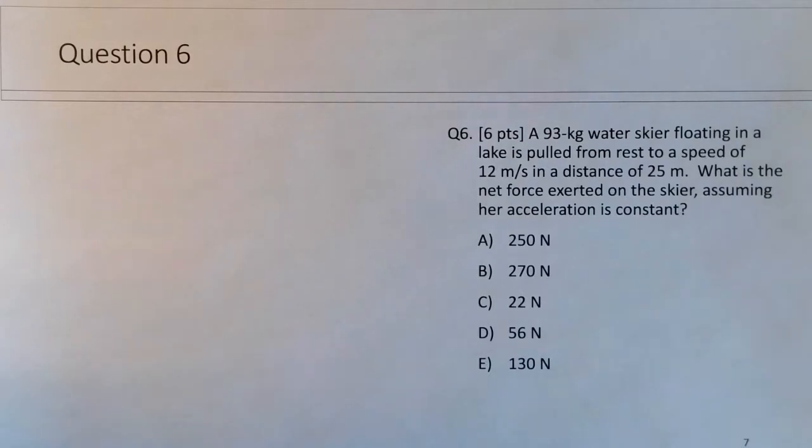Context is a 93 kilogram water skier floating in a lake. It's pulled from rest to a speed of 12 meters per second at a distance of 25 meters. What's the net force acting on the skier, assuming her acceleration is constant?